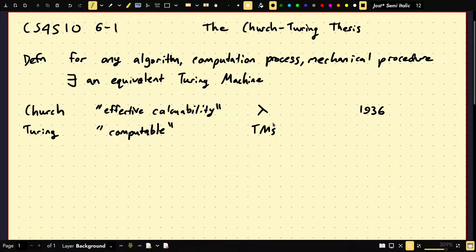Even though Church beat Turing to the press, Turing's proof is miles better. The definition of a Turing machine is very intuitive, natural, and mechanical, whereas lambda calculus is all this math — not as intuitive. Turing's contribution wasn't just solving the open problem but also coming up with a natural and understandable model of computation. Today I'm going to present Turing's 'direct appeal to intuition.'